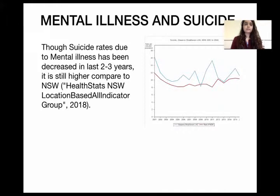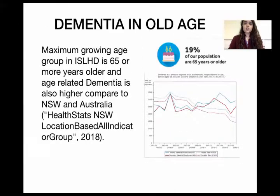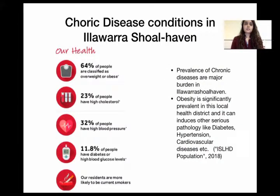The suicide rate due to mental illness has decreased over the last two to three years, but it is still higher compared to the rest of NSW. The maximum growing age group in this local health district is 65 years and older, and age-related dementia is also higher compared to NSW. In terms of chronic diseases, 64% of the total population are classified as obese or overweight, 23% have high cholesterol, 32% have high blood pressure, and 11.8% have diabetes. Smoking rates are also higher in this district.